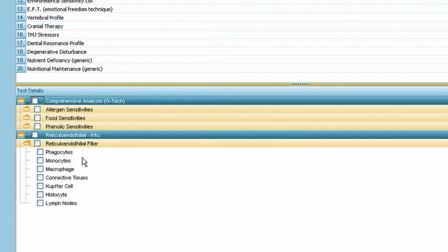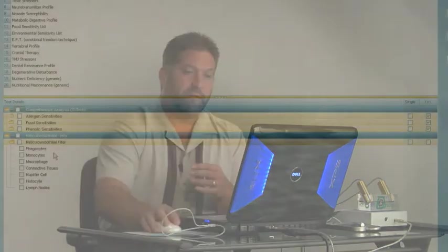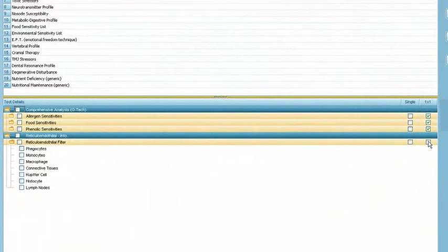The body's phagocytes, monocytes, macrophage, the connective tissues that deal with immune function, histocytes, lymph nodes, the Kupffer cell. And obviously, we'd want to set this as one by one.